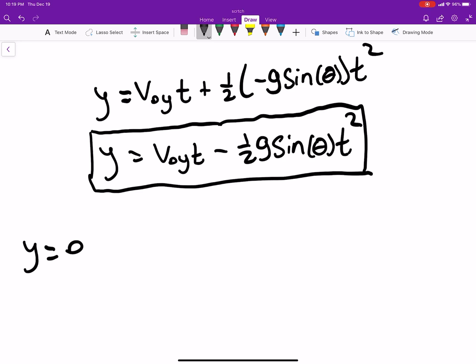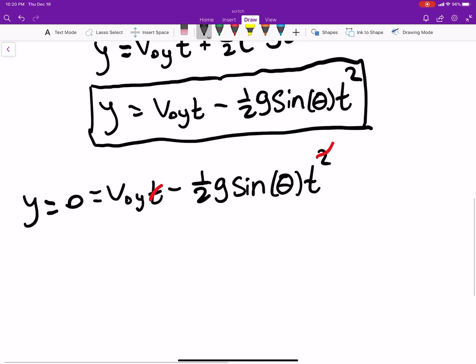So if y is equal to zero, then zero is equal to v y naught t minus one half g sine of theta times t squared. And all we have to do here is solve for time. I'll go pretty quick through the algebra. You'll get t equals two v naught y divided by g sine of theta. So we have this time. This is the time it takes for it to go back to the bottom.